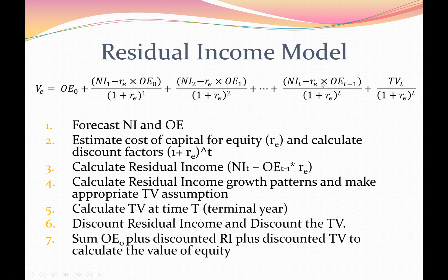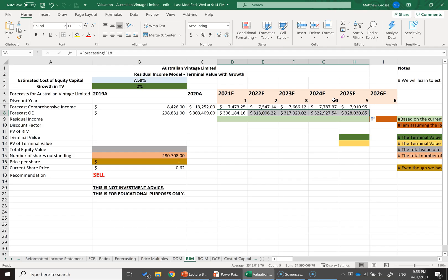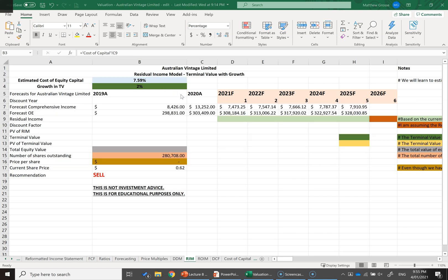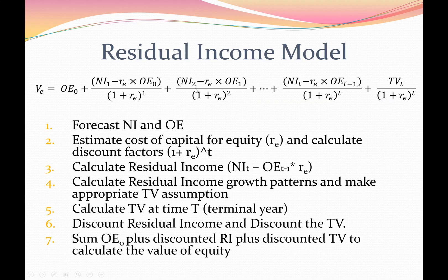I now have each of these numbers for the residual income model formula. Step two is to estimate the cost of capital for equity — the RE term in the formula. We'll learn how to estimate that in future topics, but in the spreadsheet I've chosen the cost of capital to be 7.59%, referencing the cost of capital worksheet. So we now know the owner's equity forecast, the net income forecast, and the RE term, but we still need to figure out the terminal value assumptions.